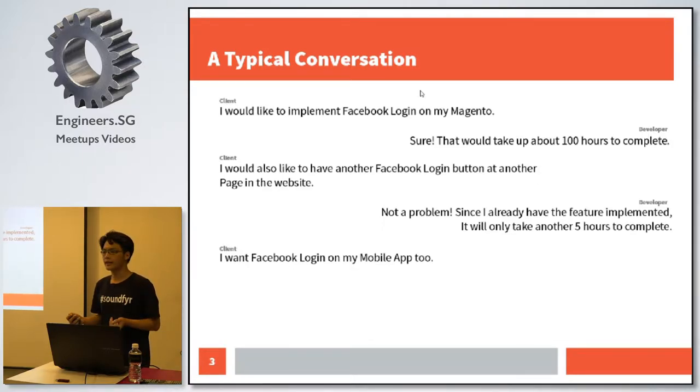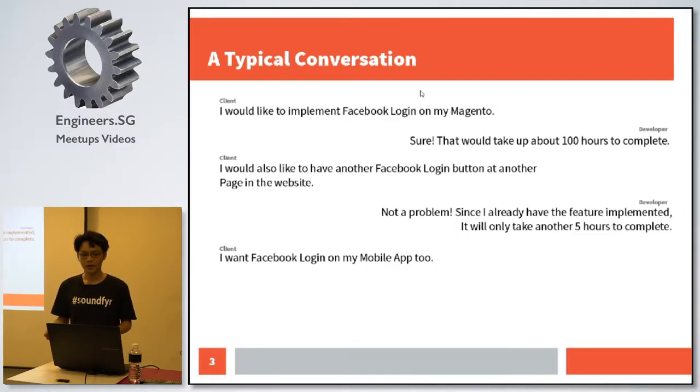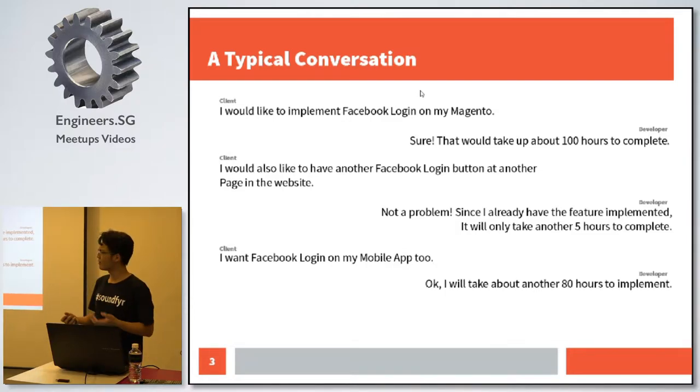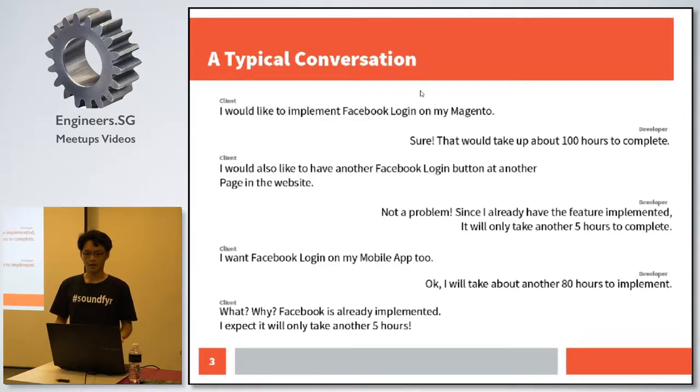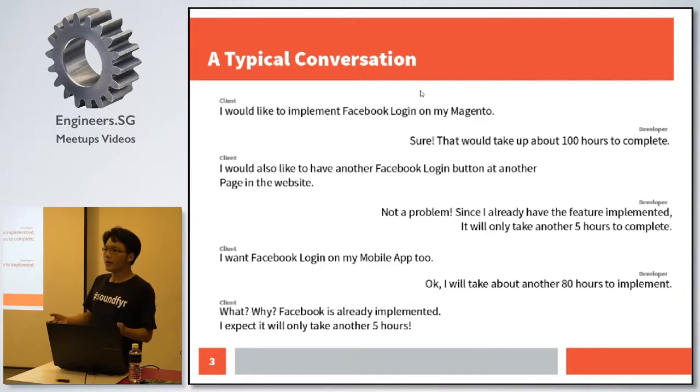And then the client comes back again and say, I want to develop this in a mobile app. I want Android and iOS. I will take about maybe 80 hours to complete. And then the client goes, what? Why? I mean, Facebook, you took like five minutes to re-implement it on another page. But why does it take 80 hours to do a mobile app this time round? It doesn't make sense. And to a client, understandably, they wouldn't understand. IT architectures. We are developers on our own. We will understand better.